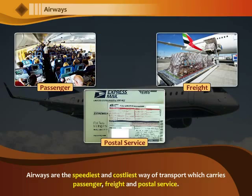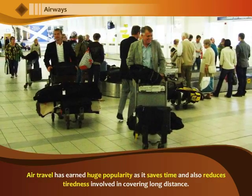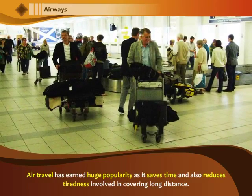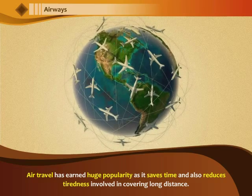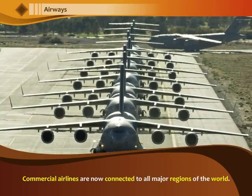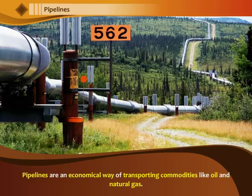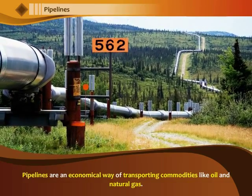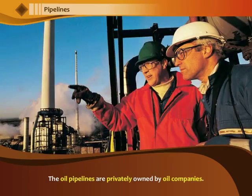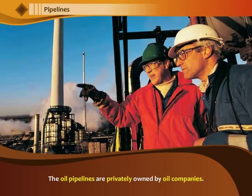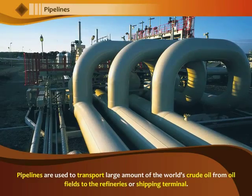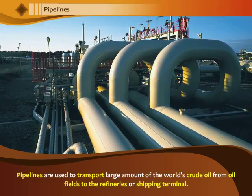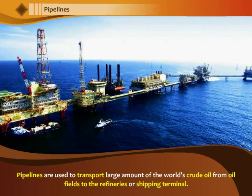Airways are the speediest and costliest way of transport, carrying passengers, freight and postal services. Air travel has earned huge popularity as it saves time and reduces tiredness involved in covering long distances. Commercial airlines are now connected to all major regions of the world. Pipelines are an economical way of transporting commodities like oil and natural gas. The oil pipelines are privately owned by oil companies and are used to transport crude oil from oil fields to refineries or shipping terminals.